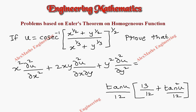Hi students, this is Alex. In this video we are going to discuss a problem based on Euler's theorem of homogeneous functions. The function u is cosecant inverse of (x^(1/2) + y^(1/2)) divided by (x^(1/3) + y^(1/3))^(1/2).